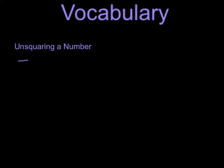For example, 5 squared equals 25. To unsquare 25, we divide 25 by 5 and we come up with the answer 5.